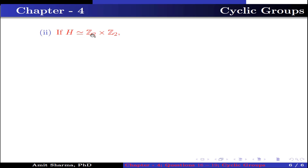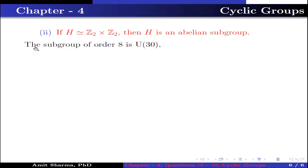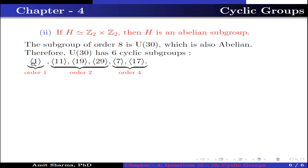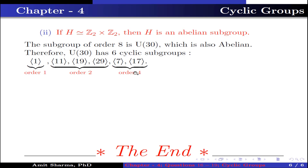Case 2: If H is isomorphic to Z2 × Z2, then H is an abelian subgroup, but in this question we need to find only the cyclic subgroups. Also, the subgroup of order 8 is U30 itself, which is also an abelian group. Therefore, U30 has 6 cyclic subgroups: the subgroup generated by 1 of order 1; subgroups generated by 11, 19, and 29 of order 2; and subgroups generated by 7 and 17 of order 4.